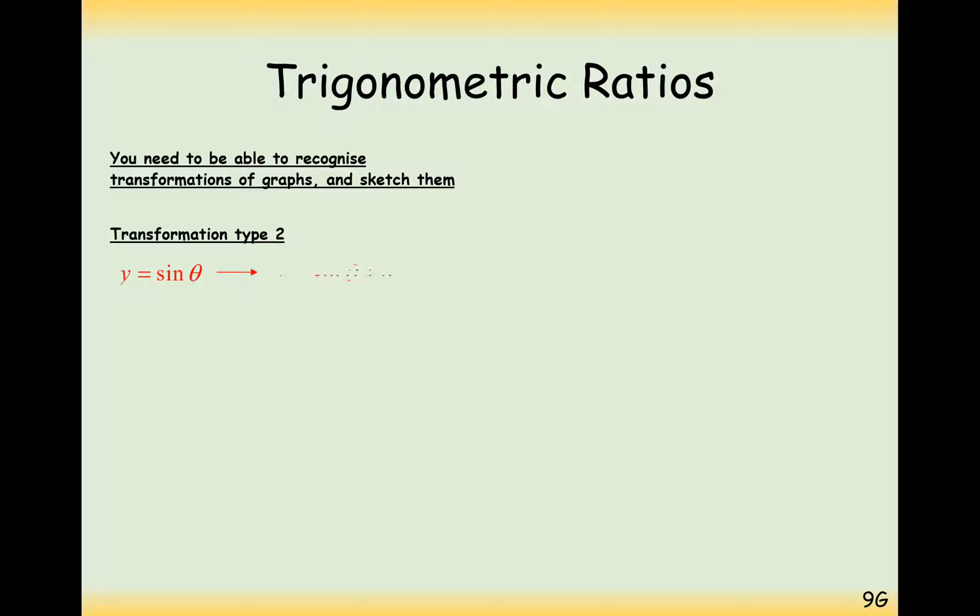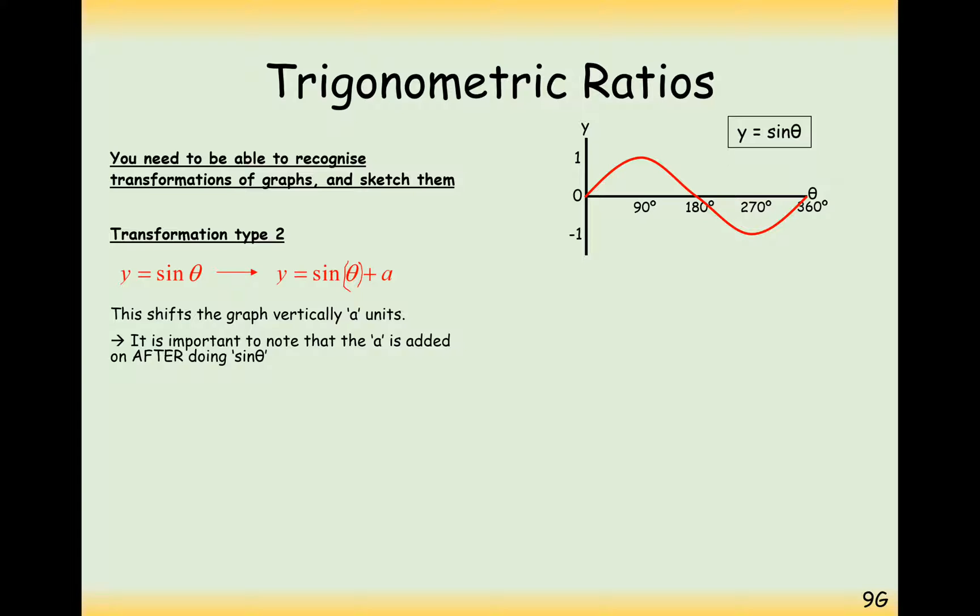A second type of graph transformation here and that is translation up and down. So if we add on a after we have signed our theta, then we're going to move it vertically upwards or downwards depending on the value of a. So for example, sine theta plus 1 will shift our graph up by 1. So be really careful of your graph intersections here. It's only going to intersect 270 here and the rest of it's going to be above the axis here.